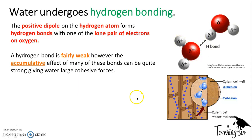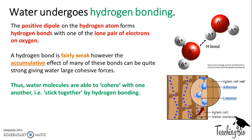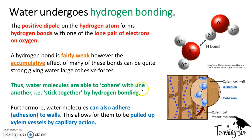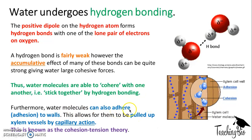The hydrogen bond itself is actually really weak, but it's the cumulative effect of lots of hydrogen bonds that gives water its properties. Water molecules can cohere with one another — which basically means they stick together — by hydrogen bonding. This forms the basis of the cohesion tension theory and the movement of water up xylem vessels, allowing water to be pulled up by xylem vessels, which is known as capillary action. Cohesion tension theory is something we look at again when we cover mass transport of water.